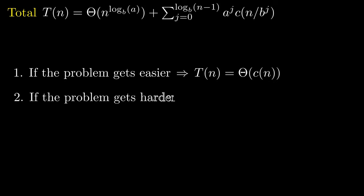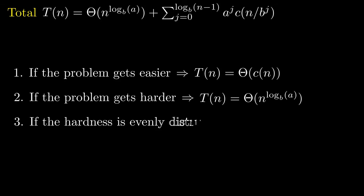Second case, the problem gets harder with each level. The leaves are the hardest level. We can hide everything else. Thus, T of n equals to the work done in the leaves, which is theta of n to the power of log b a. Third case, each level is equally hard. We can hide nothing in notation. T of n equals to the height times the work of some level. We know that the height is log b n. Let's choose the leaf level, which again is theta n to the power of log b a.